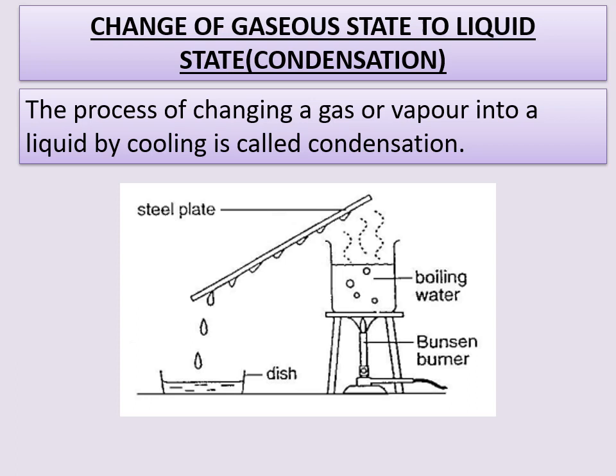Burns caused by steam are much more severe than those caused by boiling water, even though both are at the same temperature of 100 degrees Celsius. Steam at 100 degrees has more heat energy equal to the latent heat of vaporization than boiling water at 100 degrees. When steam falls on your skin and condenses to water, it gives out that extra energy — this is the reason steam causes more severe burns.